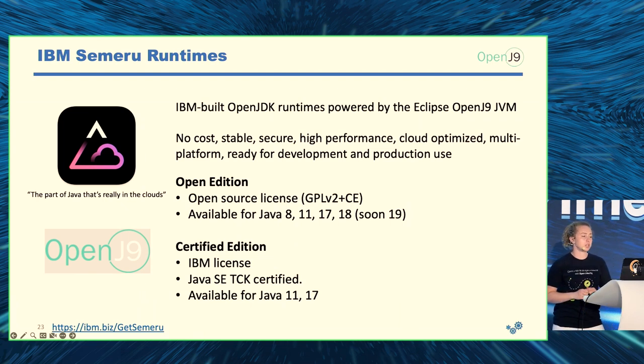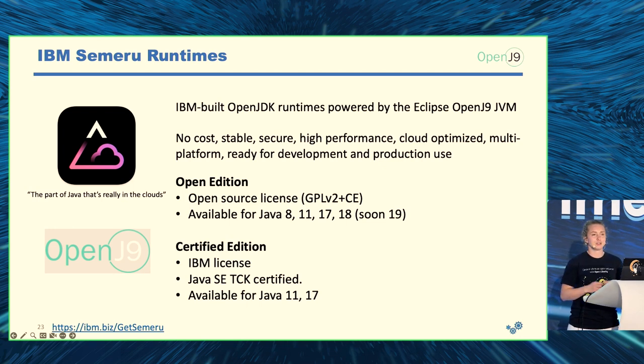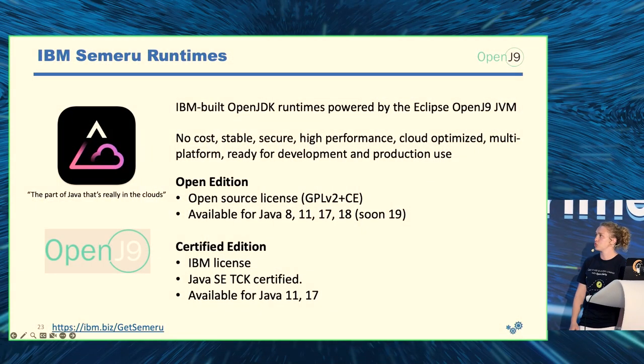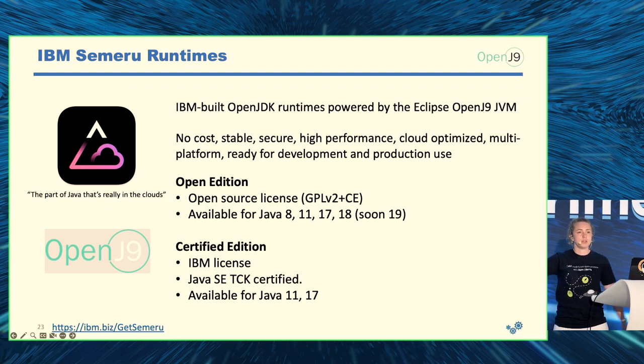IBM Semaru runtimes is the IBM OpenJDK runtime powered by Eclipse OpenJ9. The name Semaru comes from the tallest mountain on the island of Java - because we're in the clouds. There are different editions including an open source edition. You can try it at Get Semaru.